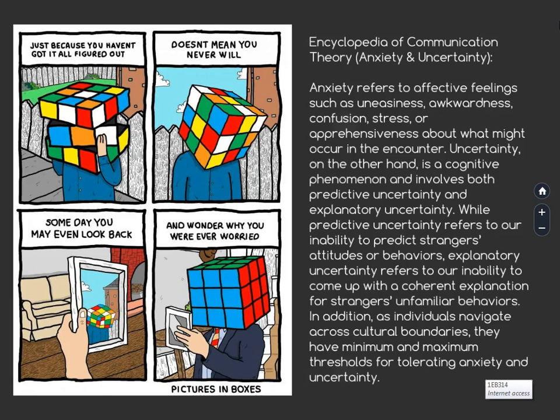Uncertainty, on the other hand, is a cognitive phenomenon and involves both predictive uncertainty and explanatory uncertainty, which means it also affects our intellect. Predictive uncertainty refers to our inability to predict strangers' attitudes or behaviors, while explanatory uncertainty refers to our inability to come up with a coherent explanation for strangers' unfamiliar behaviors. As individuals navigate across cultural boundaries, they have minimum and maximum thresholds for tolerating anxiety and uncertainty. In a nutshell, communication apprehension affects us both before and after moments of severe stress, and it affects both our emotions and our minds.